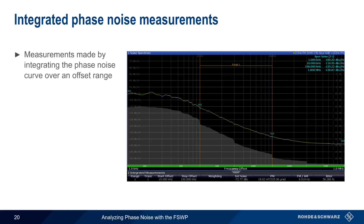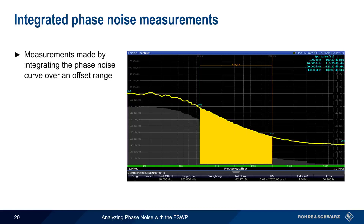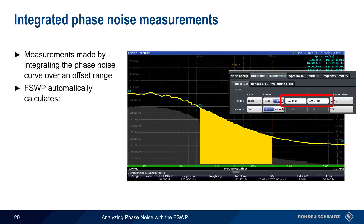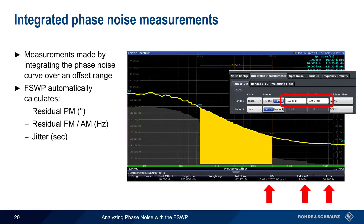Another type of measurement involves integrating between a pair of offsets in the phase noise curve. These are called integrated or residual measurements, and the integration range can be specified by the user. Using this range, the FSWP automatically calculates and displays residual phase modulation in degrees, residual frequency or amplitude modulation in hertz, and jitter in units of seconds. If you are looking for phase noise in degrees or want to convert measured phase noise to jitter, these are provided by the integrated measurement function.